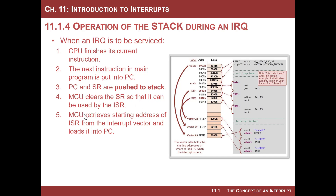Now the MCU is ready to start executing the interrupt service routine. It needs to go find the starting address of that routine — it is held in the interrupt vector table for that particular peripheral. The CPU retrieves the starting address of the interrupt service routine from the hard-coded vector location for that specific peripheral. Remember, the address that was put into the vector — you did that — by using the directives .sect and .short, and then you put the actual value of the address label for the ISR into that location.